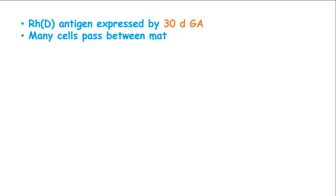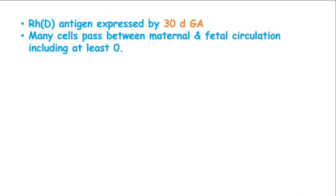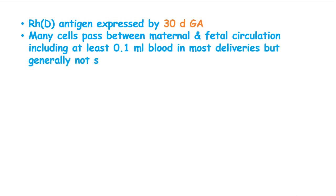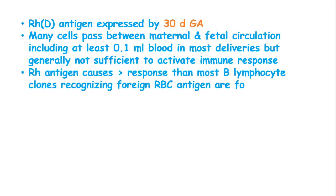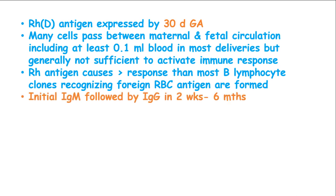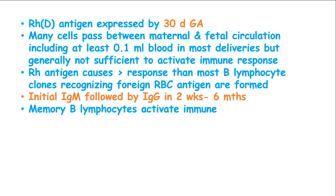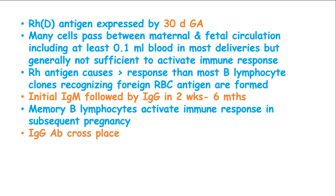Many cells pass between maternal and fetal circulation, including at least 0.1 ml blood in most deliveries. The RhD antigen causes a strong immune response and most beta lymphocyte clones recognizing the foreign red blood cell antigens are formed. The initial immunoglobulin M is followed by immunoglobulin G in 2 weeks to 6 months. Memory beta lymphocytes activate the immune response in subsequent pregnancies.